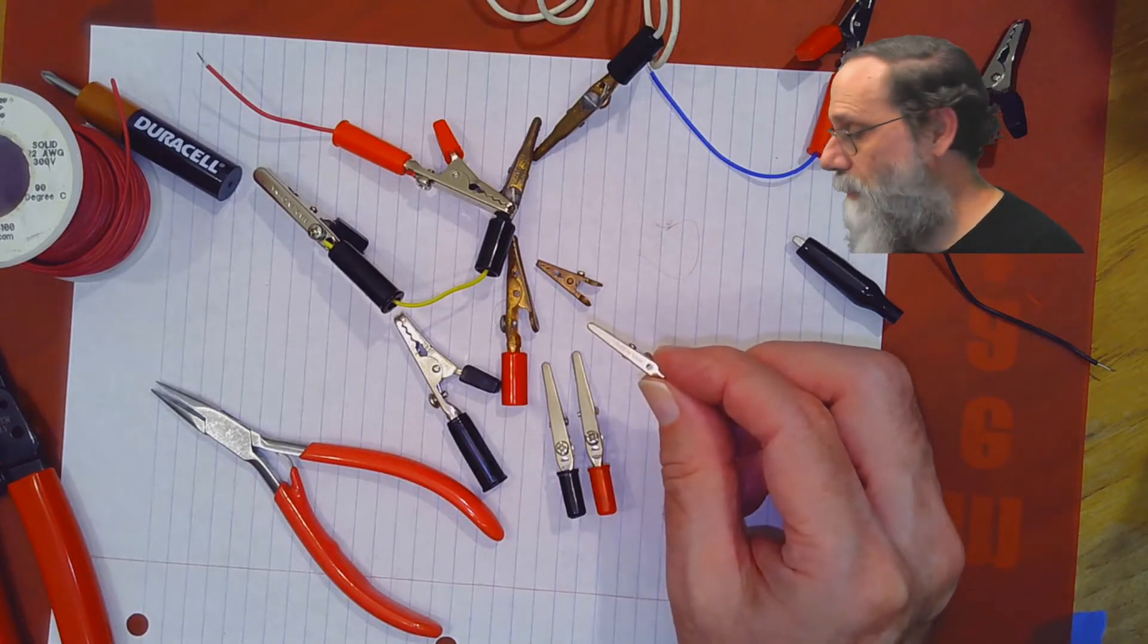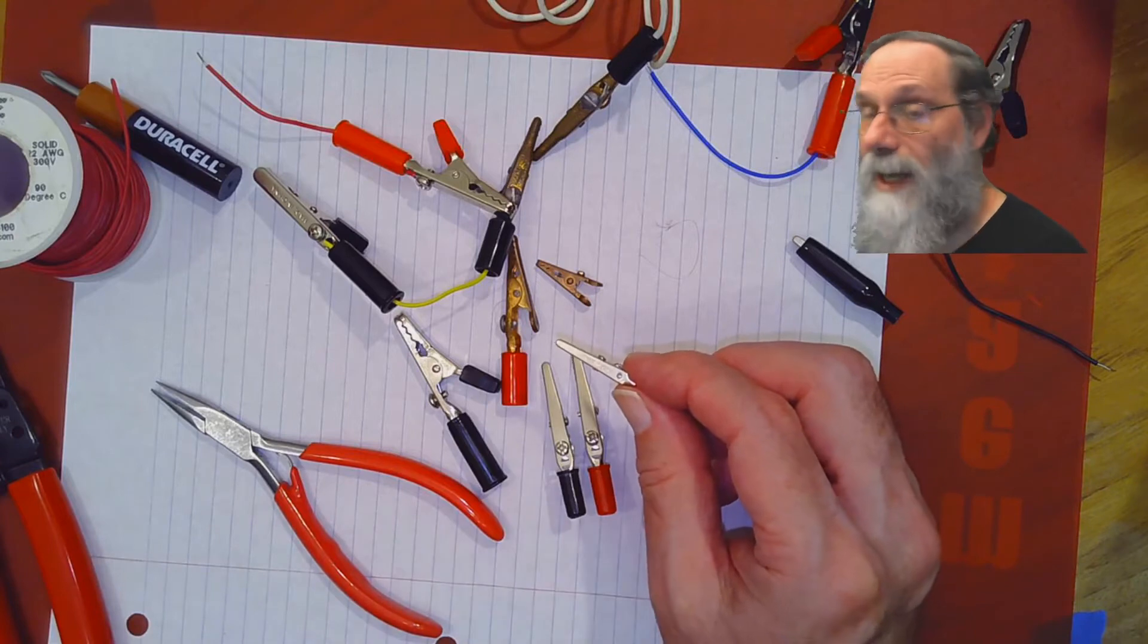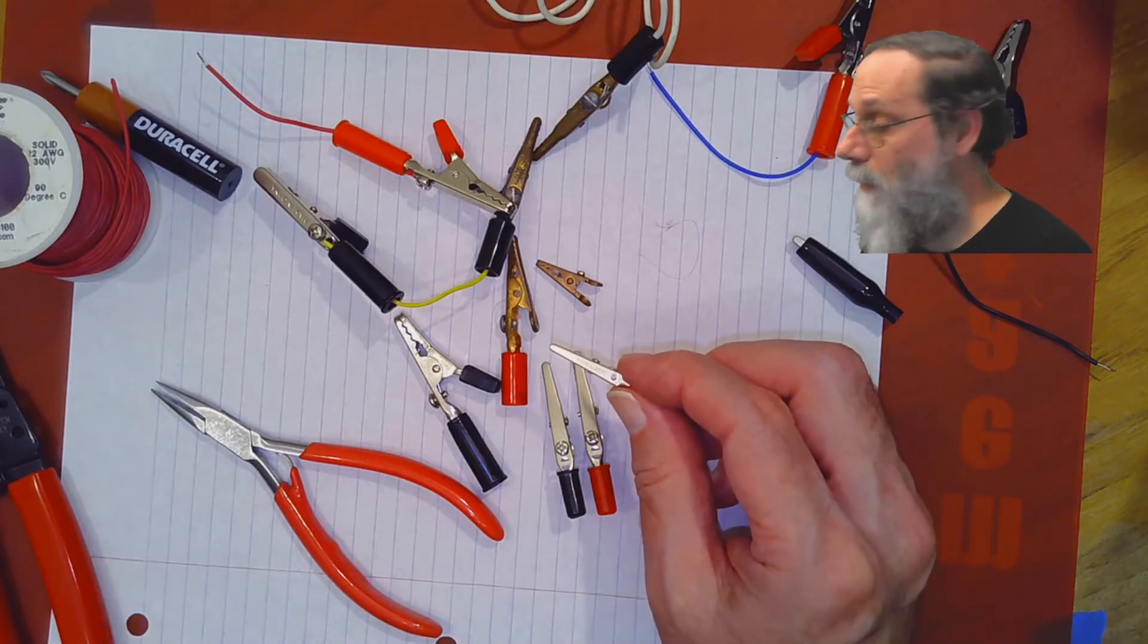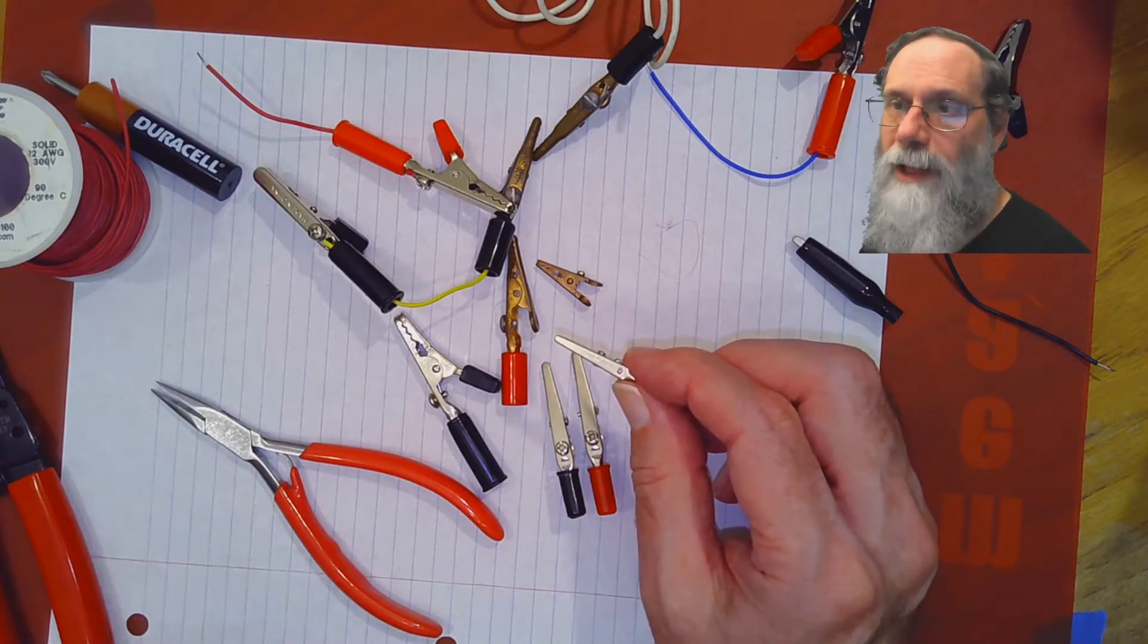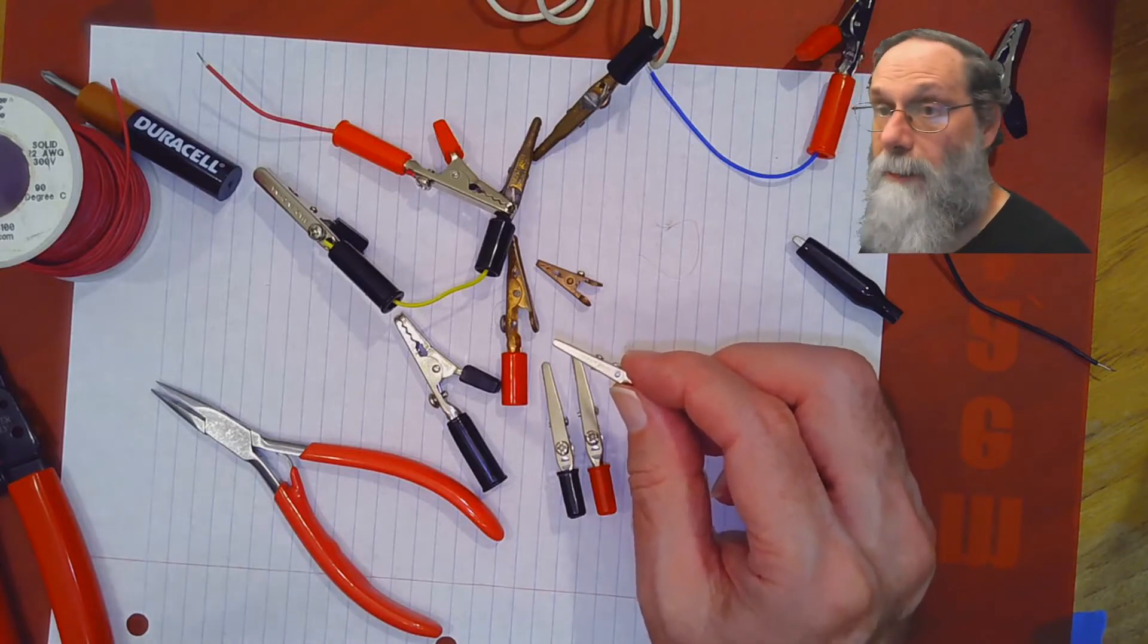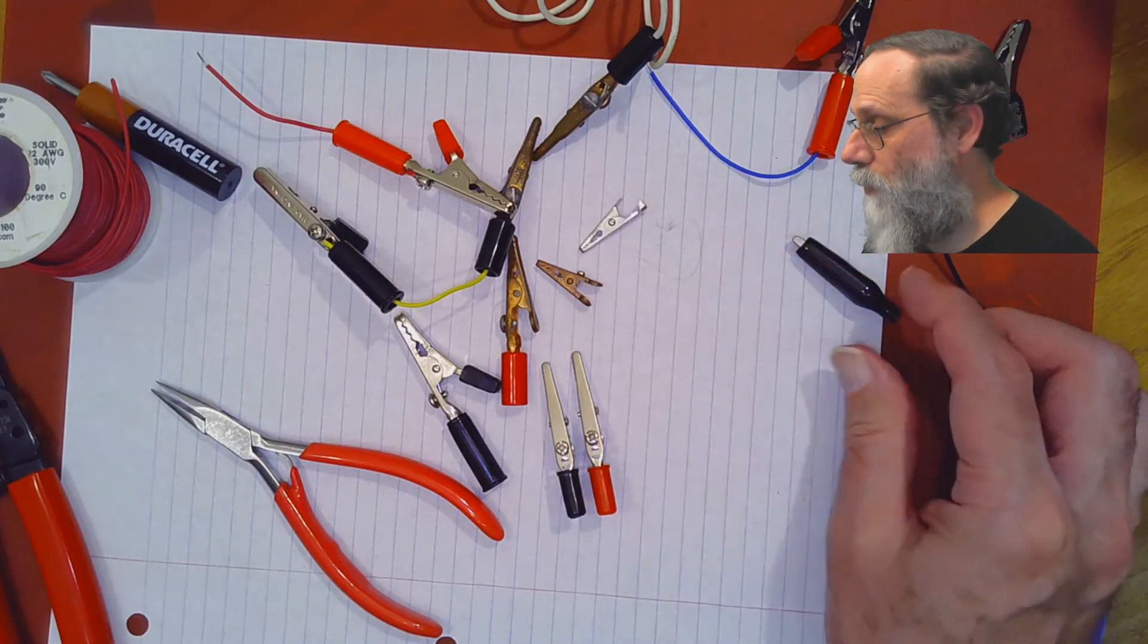We're not going to use those because they're basically single use. Once you solder them in place and crimp things down, you can't really change your mind. And so because we're going to want to have different length wires at different times, we're going to want to be able to undo the things, so we use screw terminals.